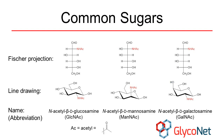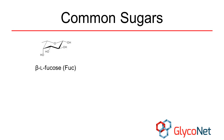Nature sometimes modifies sugars by exchanging the hydroxyl group on carbon-2 with an N-acetamido group. Carrying out this change on glucose, for instance, gives us N-acetylglucosamine, or GlcNAc for short. Similar substitutions on mannose and galactose give us N-acetylmannosamine and N-acetylgalactosamine respectively. Although most sugars exist in the D configuration, L-fucose is an example of a sugar that naturally exists in the L configuration.